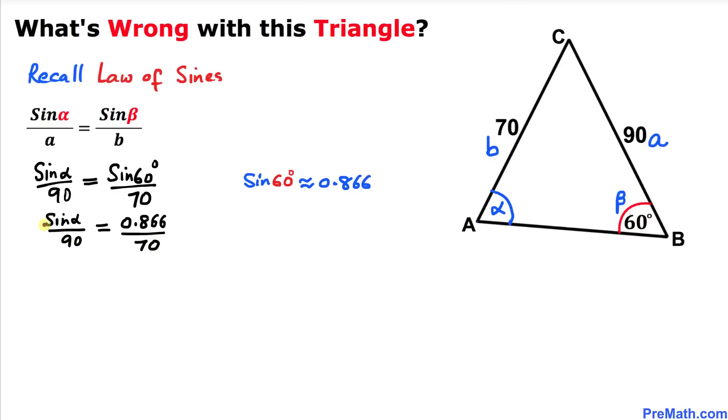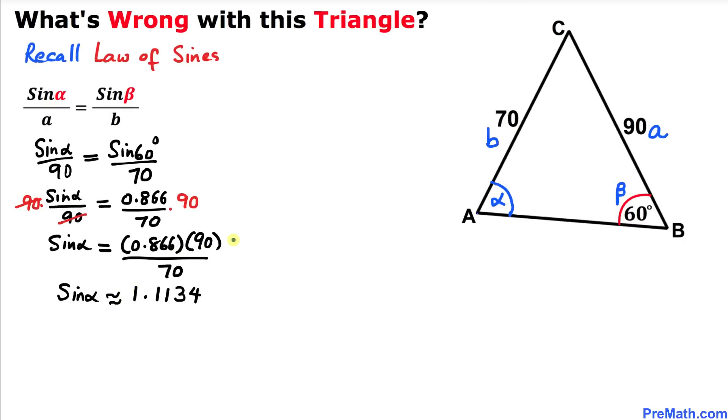Now let's multiply both sides by 90 to isolate sine of alpha. This 90 and 90 is gone. So we got sine of alpha equals 0.866 times 90 divided by 70.